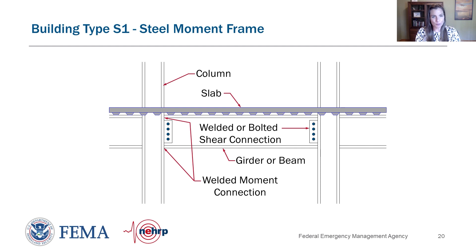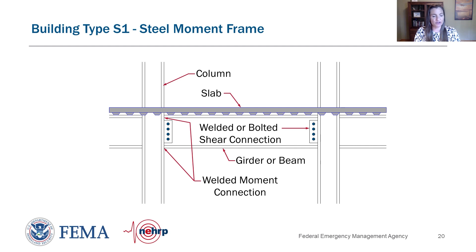A moment frame gets its resistance from girders and columns that are rigidly connected together, usually by welding the top and bottom flanges of the girders to the columns. The vertical column is an I-beam, the girder is also an I-beam, and the web of the beam gets welded or bolted to the column. This allows transfer of vertical shear from the girder to the column due to gravity loading, and the top and bottom flange connections allow horizontal earthquake forces to be transferred through bending of the columns and girders.